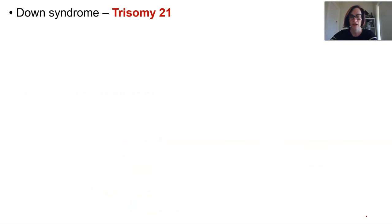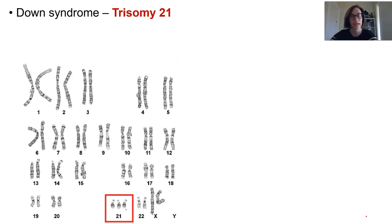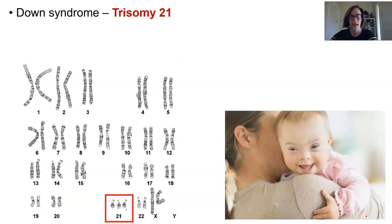Trisomy 21 or Down syndrome is one of the most commonly seen aneuploidies, and this is compatible with life. People with Down syndrome have three copies of chromosome 21, which happens to be one of our smallest ones in the genome.